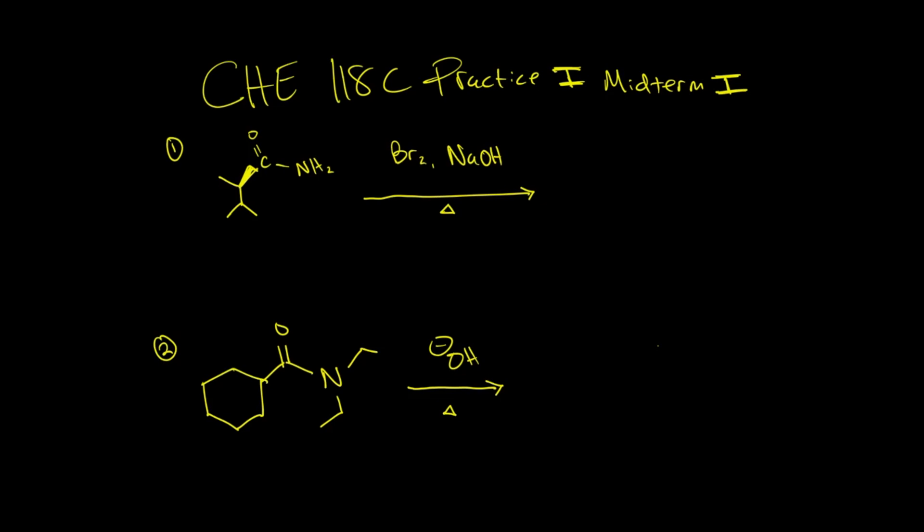For this first problem, we should be able to recognize the reagents that are given. I see that we have some Br2, NaOH, and some heat. This is a key giveaway that we're working with the Hoffman rearrangement. Key points for Hoffman rearrangement: you want to find your carbonyl, and you know that we're going to be getting rid of our carbonyl.